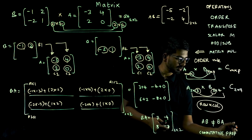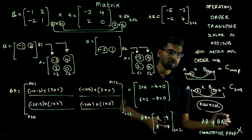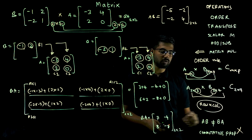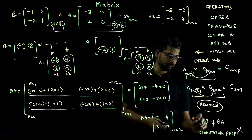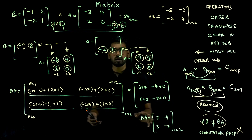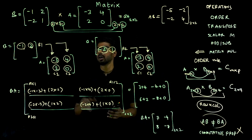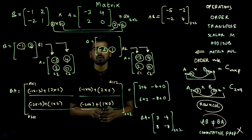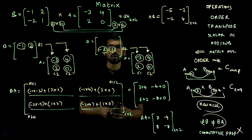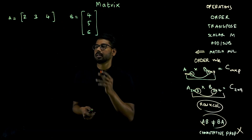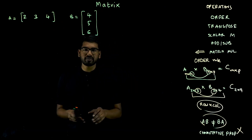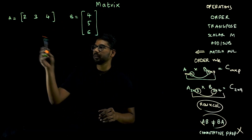For the same given matrices, AB has elements minus 5, minus 2, minus 2, 4 while BA has elements 7, minus 4, 8, minus 8. So AB is not equal to BA. Matrix multiplication does not follow the commutative property — AB is not equal to BA.